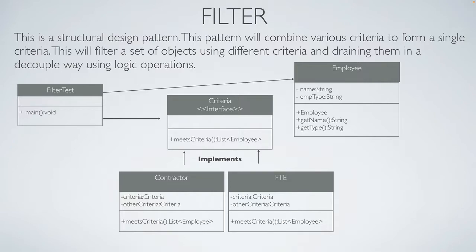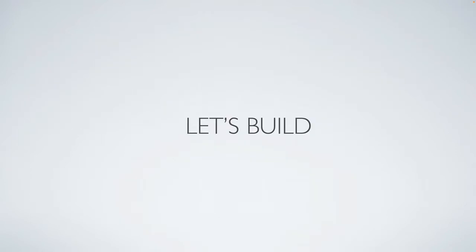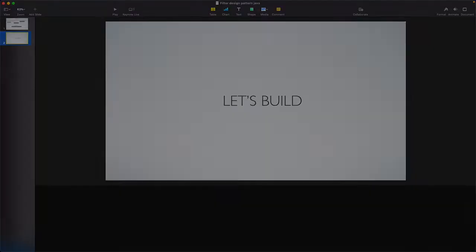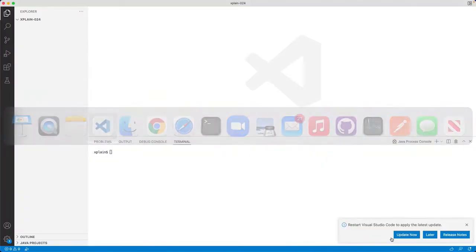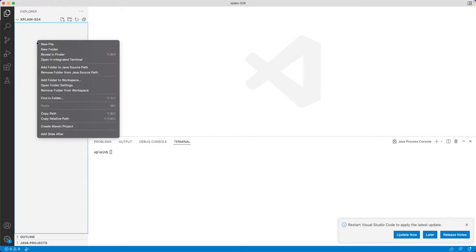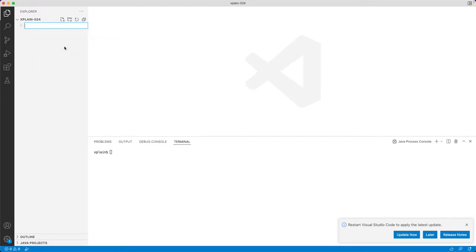Within this we have a FilterTest class with our main method to execute the scenario. Let's build this example and see how it works. Let's open our Visual Studio Code and create a new file called Employee.java.